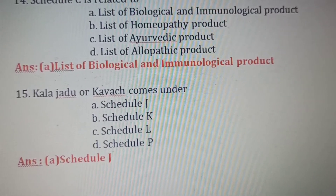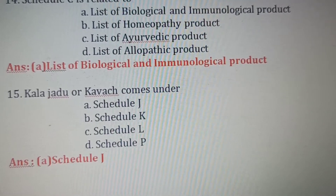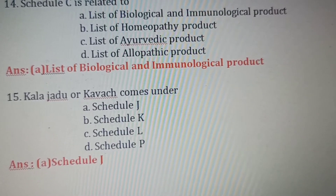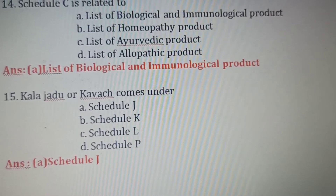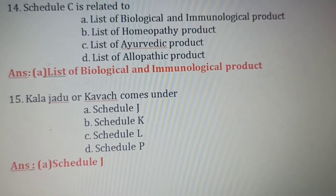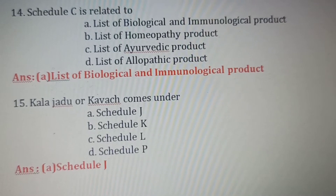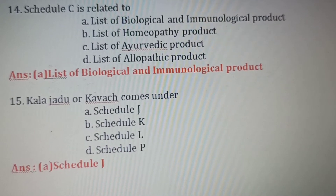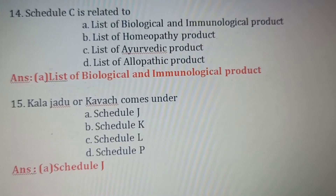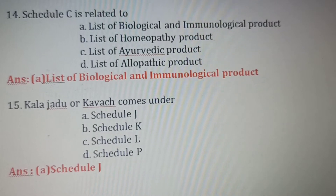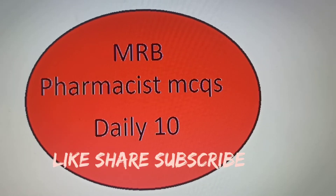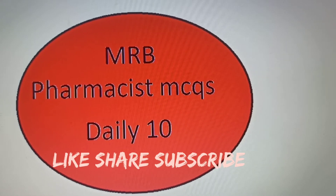Fifteenth question: Color Zadu or Kavach — black magic-related products — come under which schedule? Option A: Schedule J. Option B: Schedule K — list of drugs exempted from certain provisions of manufacture, sale and distribution. Option C: Schedule L — list of certain prescription requirements (omitted). Option D: Schedule P — life period. The correct answer is Option A, Schedule J. This concludes MRP Pharmacist MCQ's Daily 10 — Pharmaceutical Jurisprudence questions.